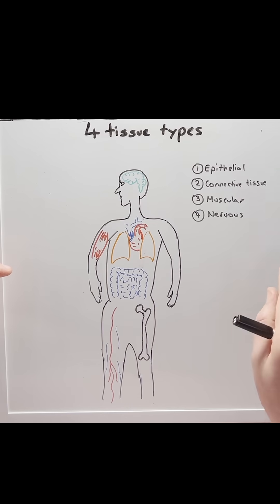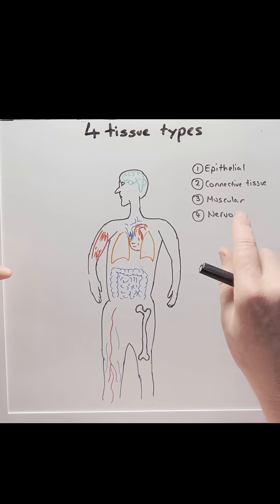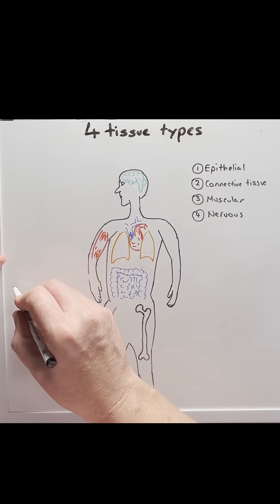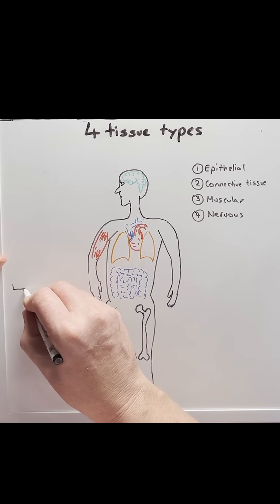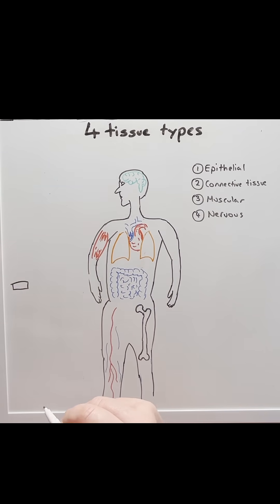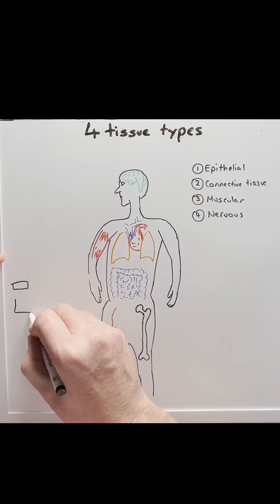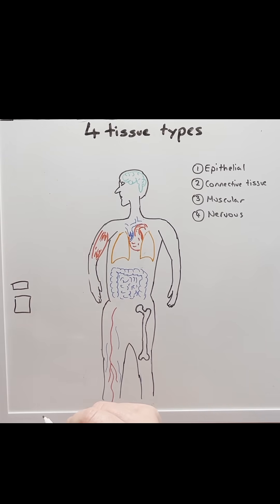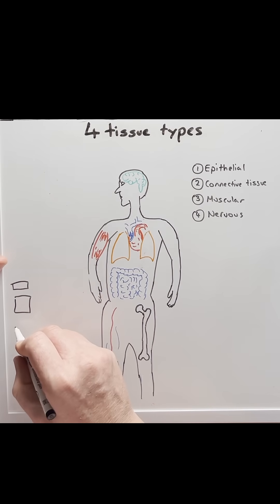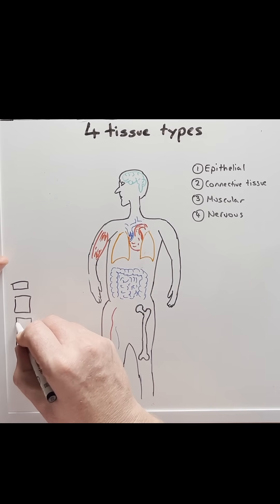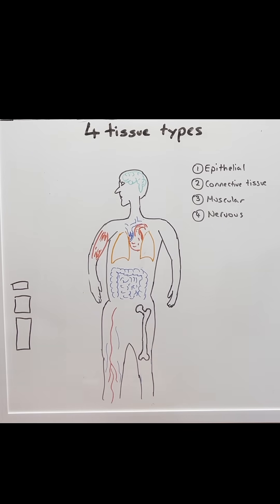We can further categorise epithelial tissue by its shape. If cells are flat looking, we call them squamous. If they're looking like a box, we call them cuboidal. And if they're shaped long and slender, we call them columnar.